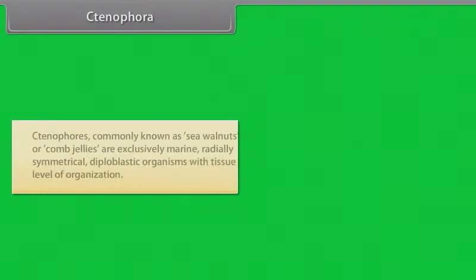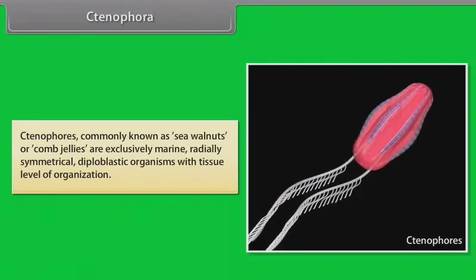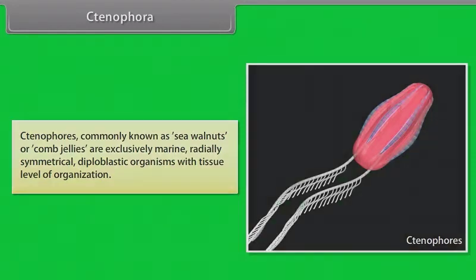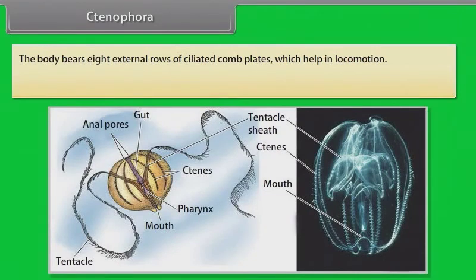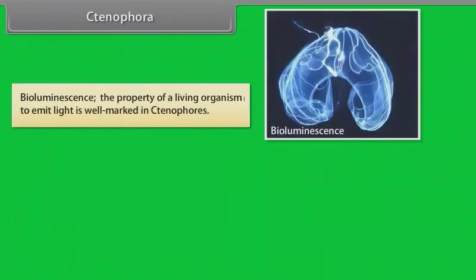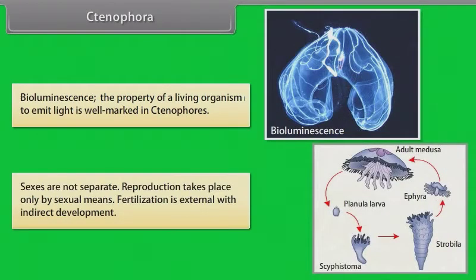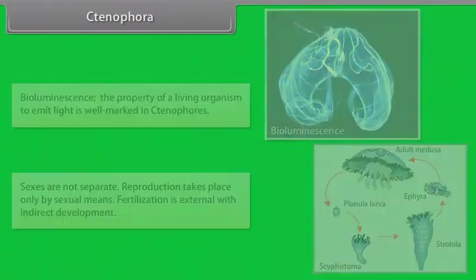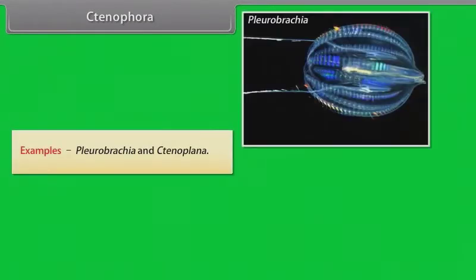Ctenophora: Ctenophores, commonly known as sea walnuts or comb jellies, are exclusively marine, radially symmetrical, diploblastic organisms with tissue level of organization. The body bears eight external rows of ciliated comb plates which help in locomotion. Digestion is both extracellular and intracellular. Bioluminescence — the property of a living organism to emit light — is well marked in ctenophores. Sexes are not separate; reproduction takes place only by sexual means. Fertilization is external with indirect development. Examples: Pleurobrachia and Ctenoplana.